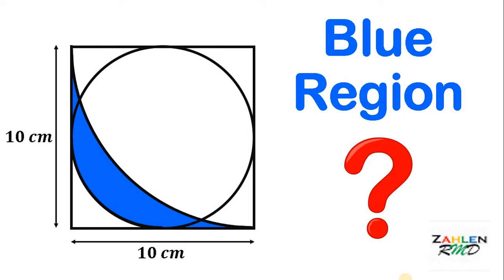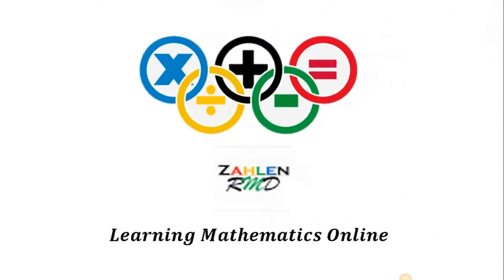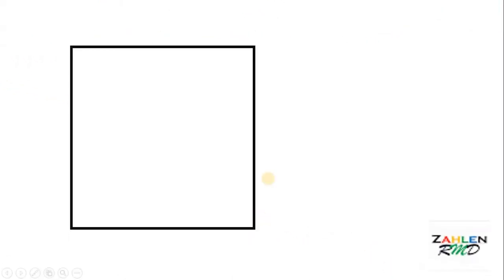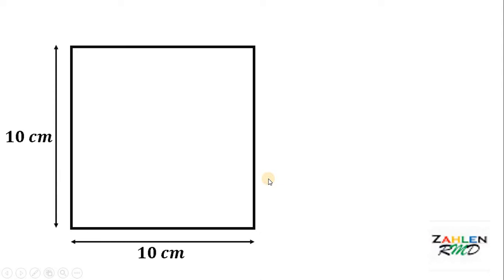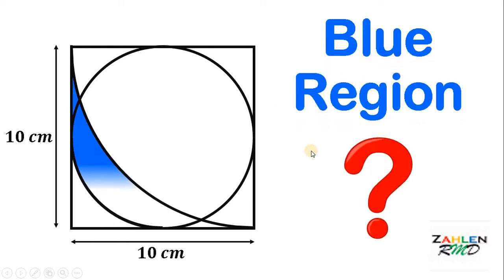Good day, everyone. Here's our math challenge for today. Let's start with a square with a side length of 10 centimeters. Next, let's draw a circle inside of this square and then draw a quarter circle like this. Now, the question is: what is the area of this blue shaded region?